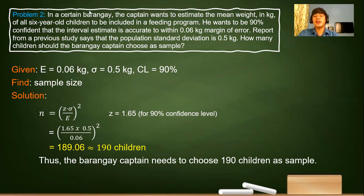Determining the number of samples will also help the barangay captain. Say for example, the meal for the day is porridge or lugaw. If the lugaw has eggs on it or chicken, the barangay captain should prepare like 190 eggs or 190 pieces of chicken tenders. So that is how you decide on things.